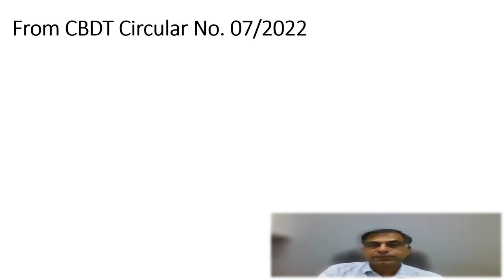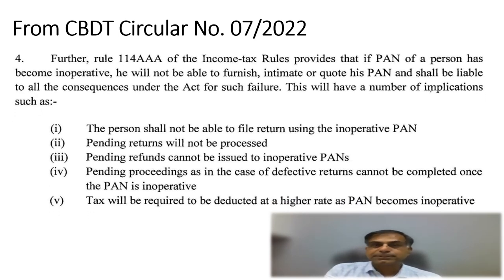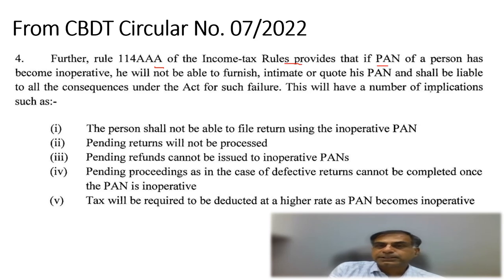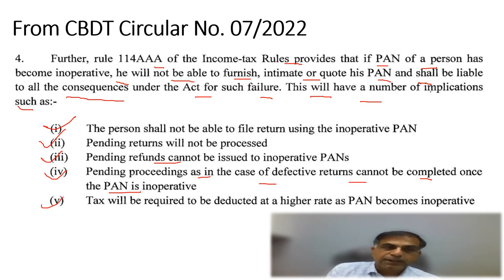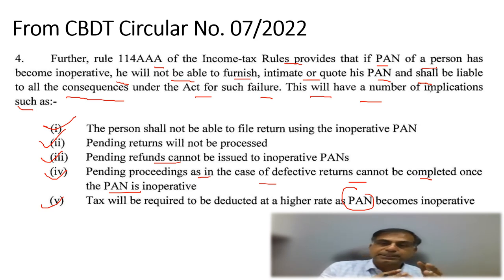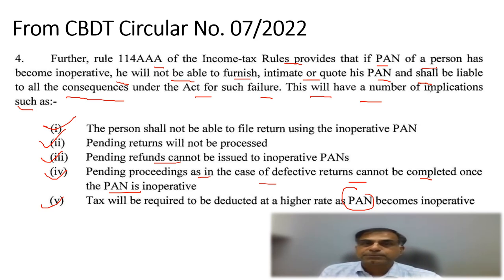One last but very important point: as per CBDT Circular No. 7/2022, para 4, Rule 114AAA provides that if a person's PAN has become inoperative, they will not be able to furnish, intimate, or quote their PAN and shall be liable to all consequences under this Act. This will have a number of implications: the person shall not be able to file a return with an inoperative PAN; pending returns will not be processed; pending refunds cannot be issued; pending proceedings such as in the case of defective returns cannot be completed; and very importantly, tax will be required to be deducted at a higher rate once the PAN becomes inoperative. So the message is clear — one must ensure their PAN-Aadhaar linking is properly done.